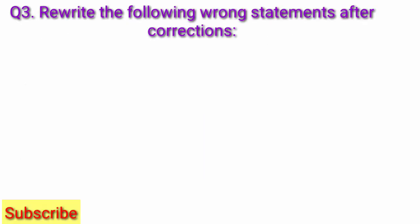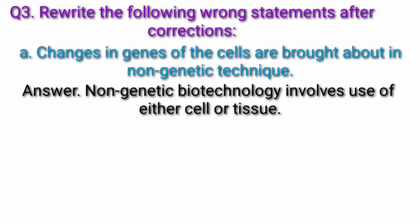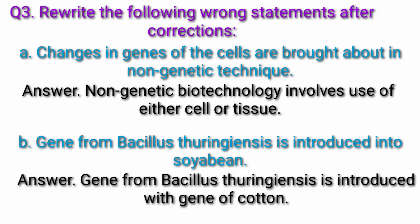Question 3: Write the following wrong statements after corrections. A. Changes in genes of the cells are brought about in non-genetic technique. Answer: Non-genetic biotechnology involves use of either cell or tissue. B. Gene from Bacillus thuringiensis is introduced into soybean. Answer: Gene from Bacillus thuringiensis is introduced with the gene of cotton.